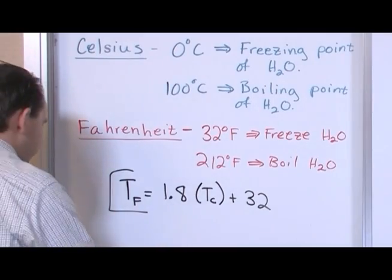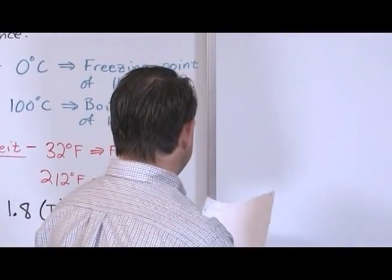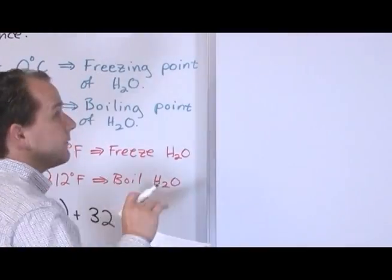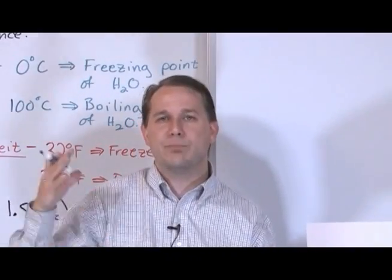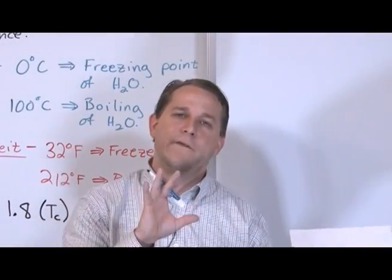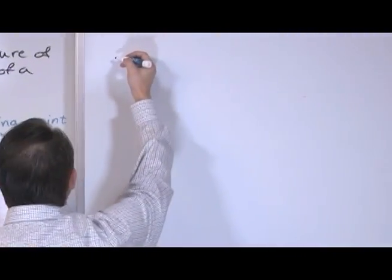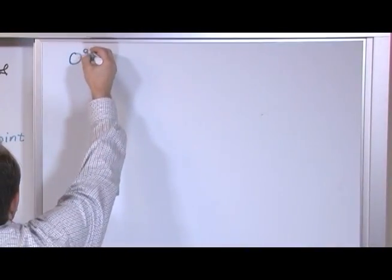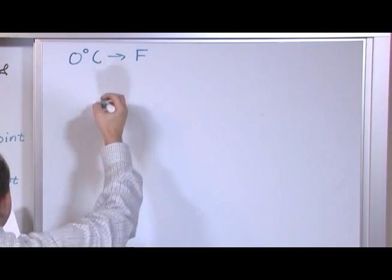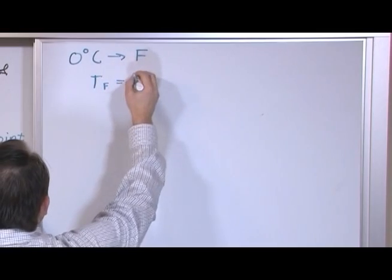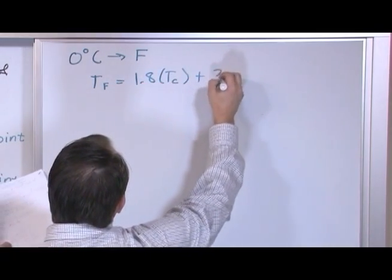Let's do a couple of quick problems to illustrate how to deal with converting temperature, because it is different from unit conversions like meters to kilometers. That's why I'm breaking this out in its own section, just so you know how to do it. So if you want to convert 0 degrees Celsius to Fahrenheit, just to be complete and show you mathematically: the temperature in Fahrenheit equals 1.8 times the temperature in Celsius plus 32.